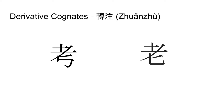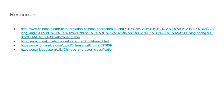While these derivative cognates may not be too useful in the understanding of Chinese writing, the Liu Shu certainly aids in the comprehension of the world's second most widespread writing system and holds an immeasurable value to the history of the most populous country in the world. Zaijian!